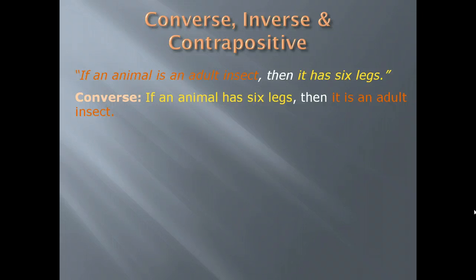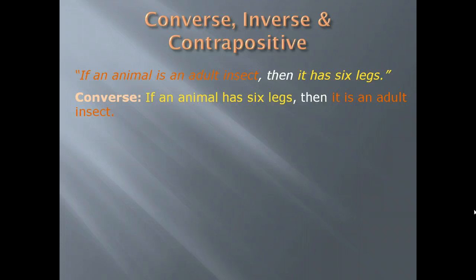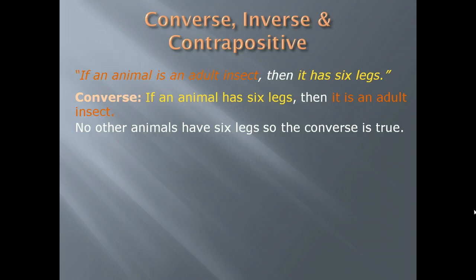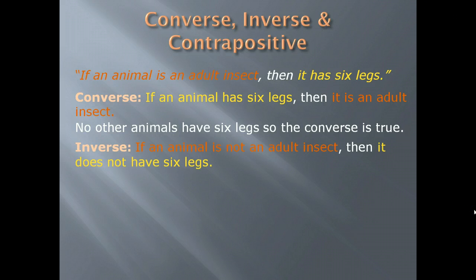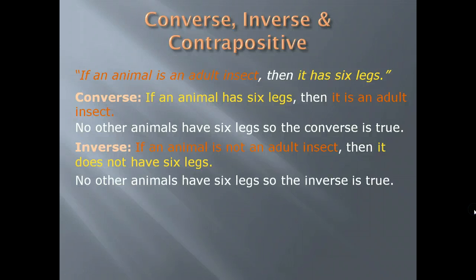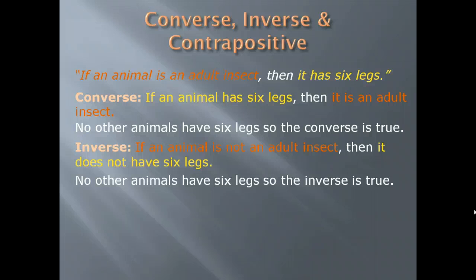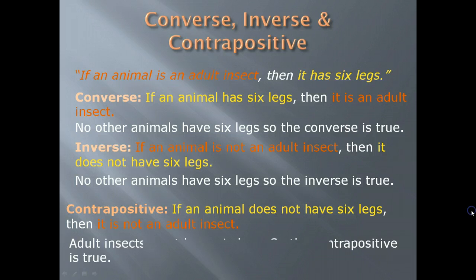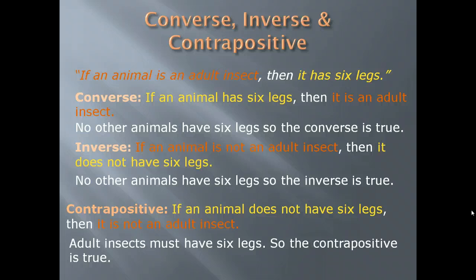The converse — if Q, then P — is: If an animal has six legs, then it is an adult insect. No other animals have six legs, so the converse is true. The inverse — not P implies not Q — is: If an animal is not an adult insect, then it does not have six legs. No other animals have six legs, so the inverse is true. The contrapositive — not Q implies not P — is: If an animal does not have six legs, then it is not an adult insect. Adult insects must have six legs, so the contrapositive is true.